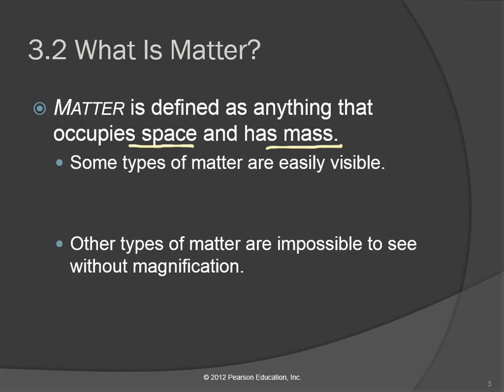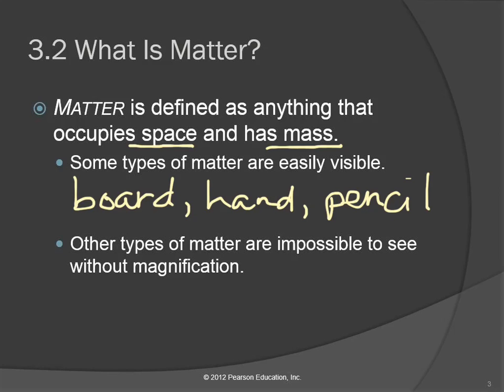Some kinds of matter we can see. What's an example of matter that you can see right now? The board. How about your hand? Can you see anything else? Pencil. Pretty much anything that you could put a sticker on is made out of matter.